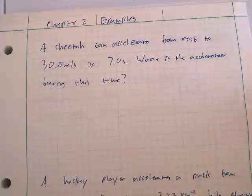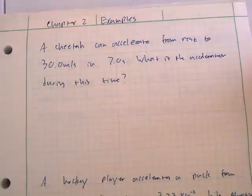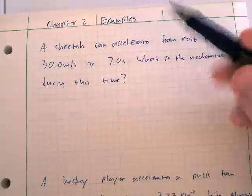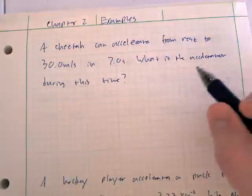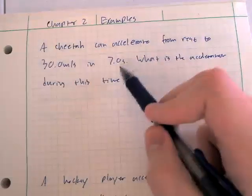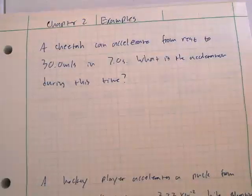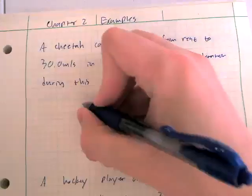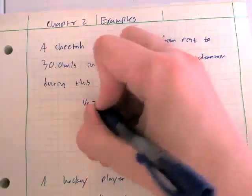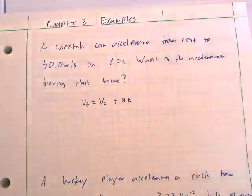We're essentially given an initial speed, a final speed, and a time, and we want to find acceleration. This is analogous to a distance equals rate times time problem — the 'distance' we're covering is going from zero meters per second to 30 meters per second, and we need to cover that change in velocity in a certain amount of time. The formula we use is: v_final equals v_initial plus a times t.